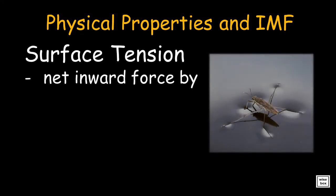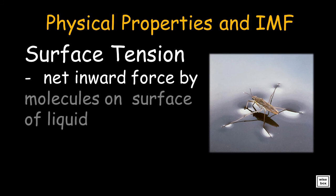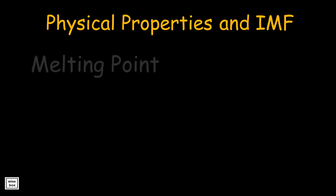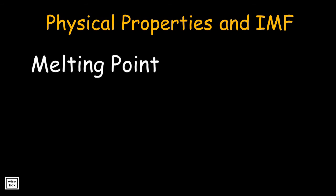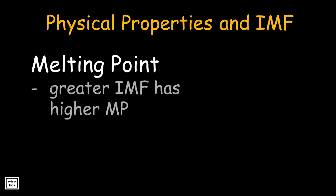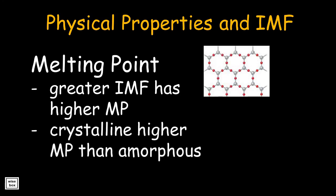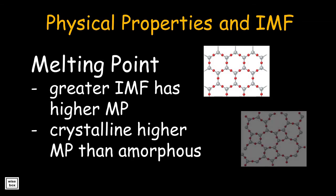Surface tension results from the net inward force experienced by molecules on the surface of a liquid. In general, the higher the intermolecular force, the greater the surface tension. In solid molecules, greater intermolecular forces result in higher melting points. The crystalline form generally has a relatively higher melting point than the amorphous form.